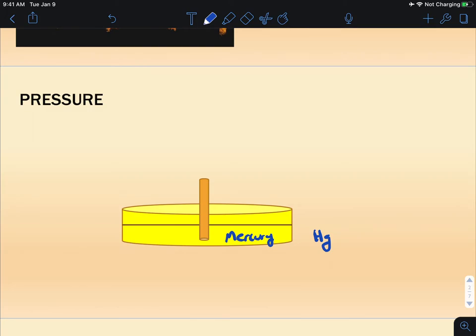We use it because it's dense. It's a pretty heavy liquid, which means that it's not going to rise up very high. I can make a barometer out of other fluids, but I might need a building 33 feet tall if I was to make it out of something like water. So we tend to use mercury for that reason.